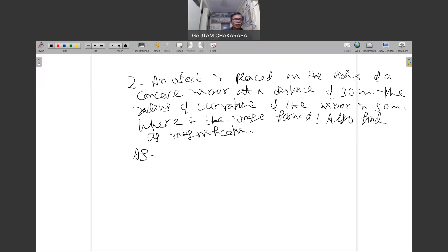You should pause the video, first try on your own, then watch how I solve it. An object is placed on the axis of a concave mirror at a distance 30 centimeter. The object distance is always negative. Radius of curvature of the mirror is minus 50, that's a concave mirror. Radius of curvature is negative. Focal length is also divided by 2, minus 25 centimeter.